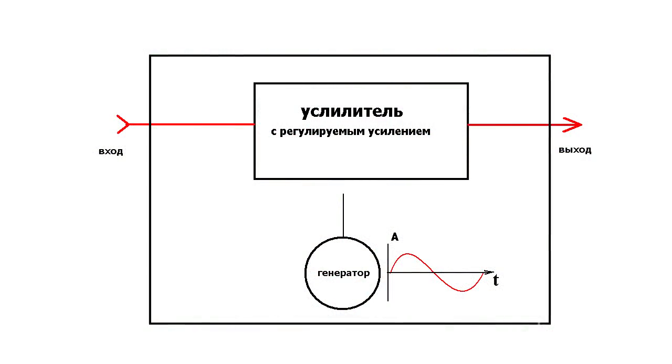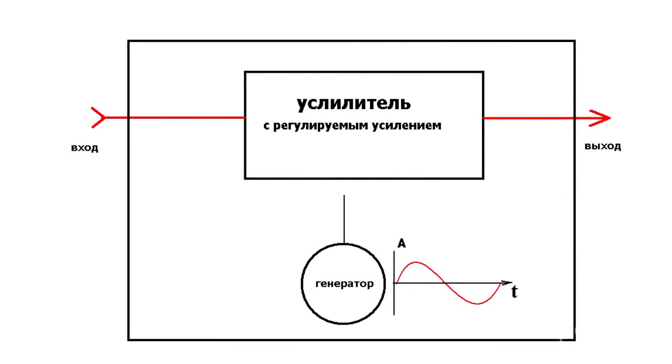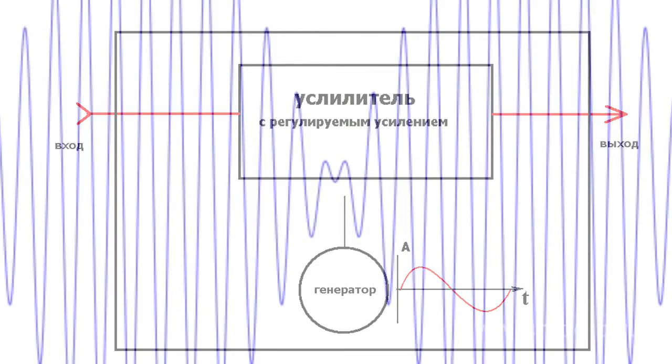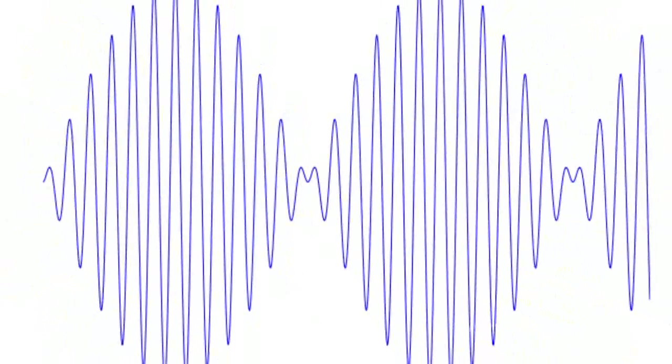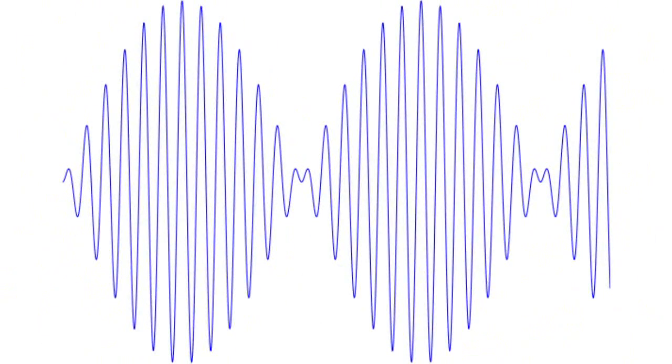Amplitude vibrato consists of two blocks: an electronic volume control and a low-frequency oscillator. It is based on amplitude modulation. The input signal is modulated with a volume control depending on the frequency and vibration modes of the low-frequency generator.